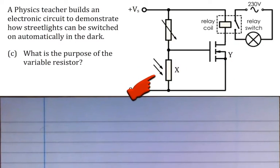And I was talking about how this circuit would work, in that as it becomes darker, the resistance of this LDR would increase, causing therefore the voltage across the LDR to increase. When the voltage across this LDR increases above a certain value, this MOSFET would conduct.